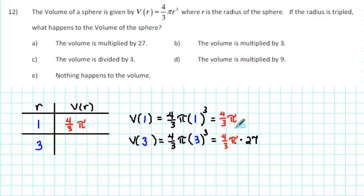Notice that the original volume, (4/3)π, is being multiplied by 27. Therefore, the volume is multiplied by 27. The correct answer is A.